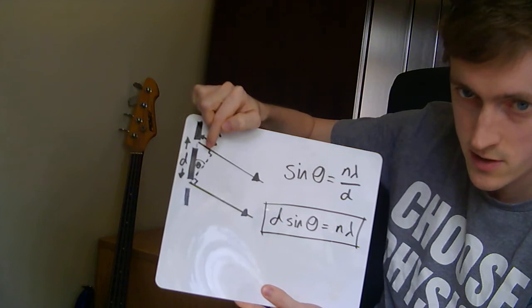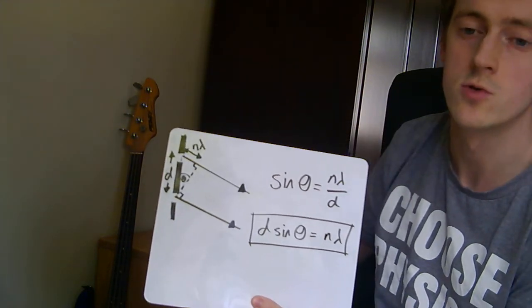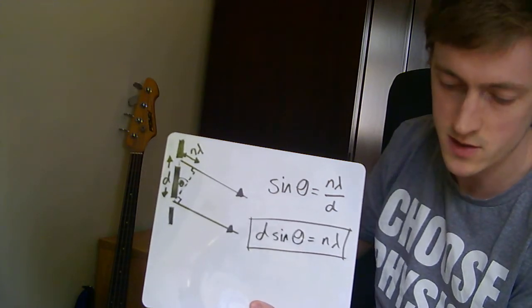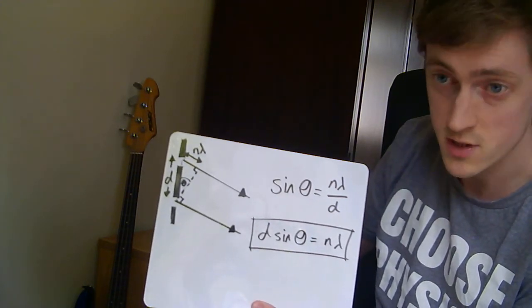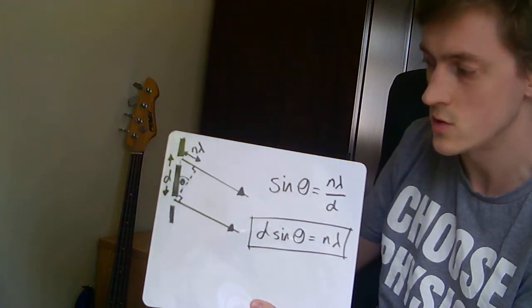It's got to be equal to a whole number of wavelengths. That's the condition for constructive interference to occur, which is what you need for your order to work.